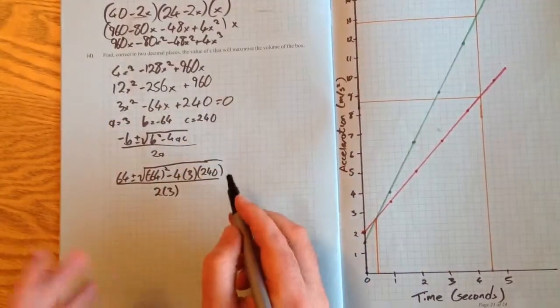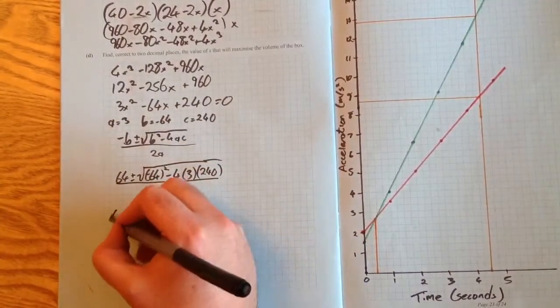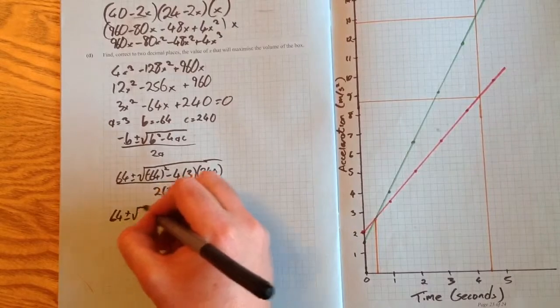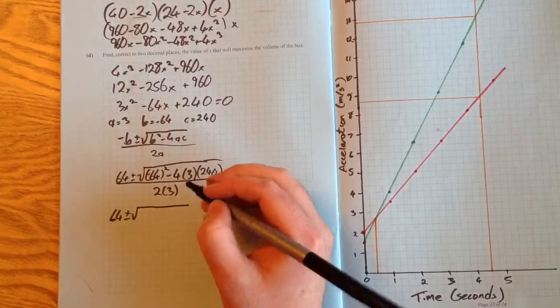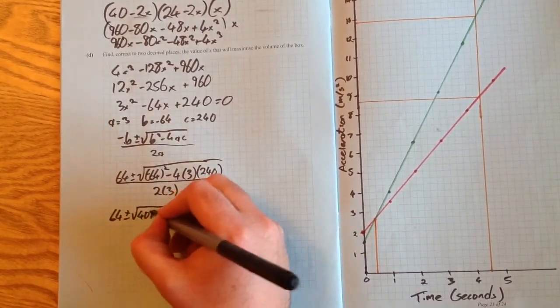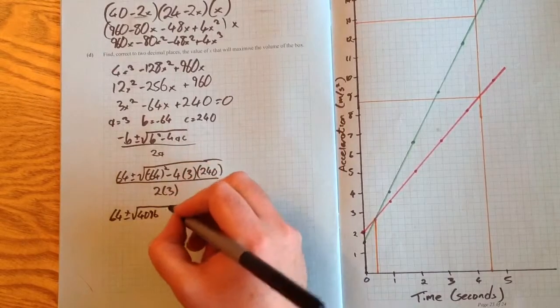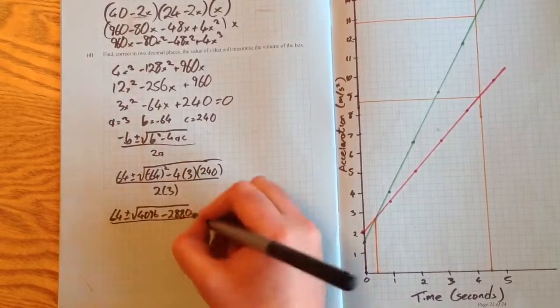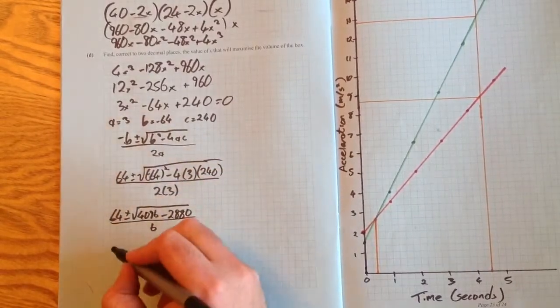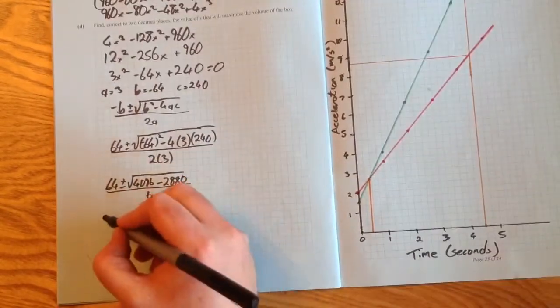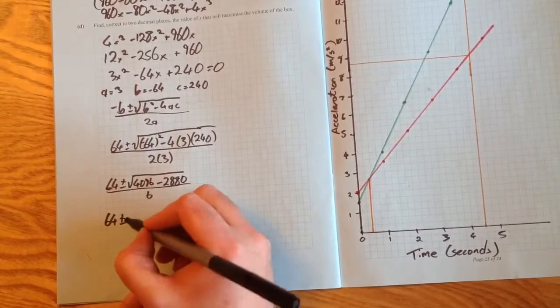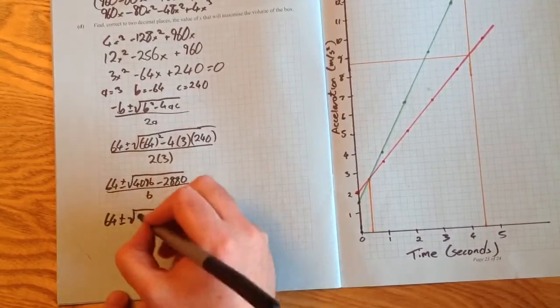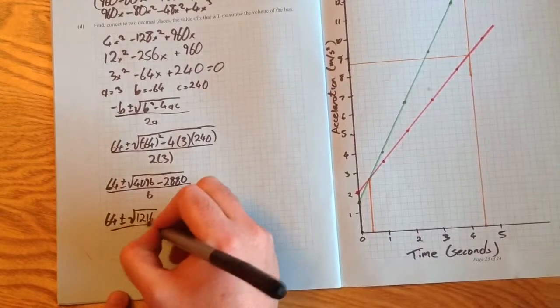So it's a long one, but fairly straightforward. 64 plus or minus the square root of 64 squared gives 4096 minus 2880. 2 times 3 is 6, so it becomes 64 plus or minus the square root of 1216 divided by 6.